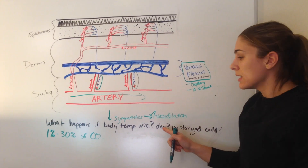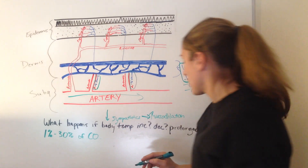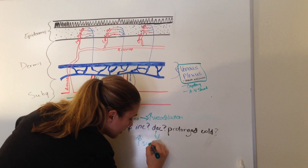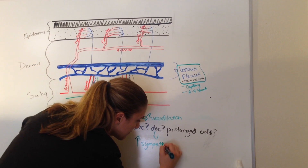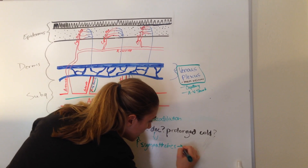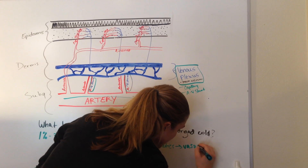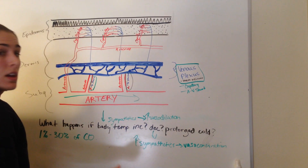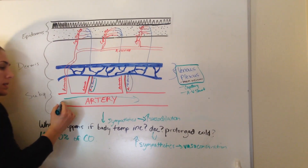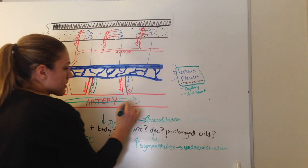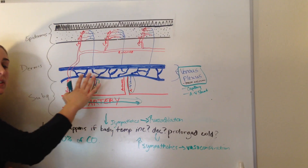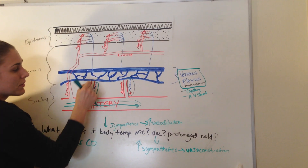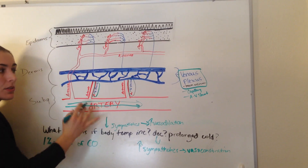Now let's talk about what happens when you get a decrease in body temperature. When you get a decrease in body temperature, you actually get an increase in sympathetic outflow from the hypothalamus. And that gives you vasoconstriction. So we have all this blood going through the arteries, but we don't want it to go to the venous plexus because we want to save our heat. So what happens is we get constriction, causing less blood to go to the venous plexus.